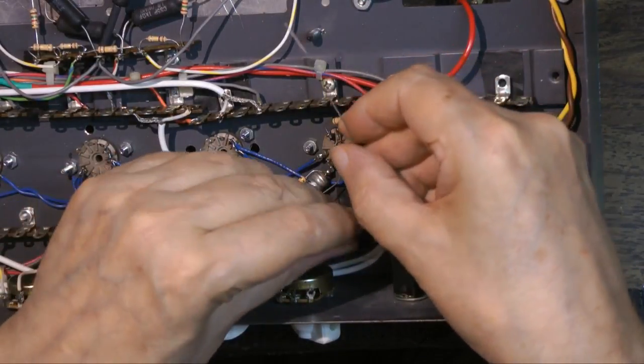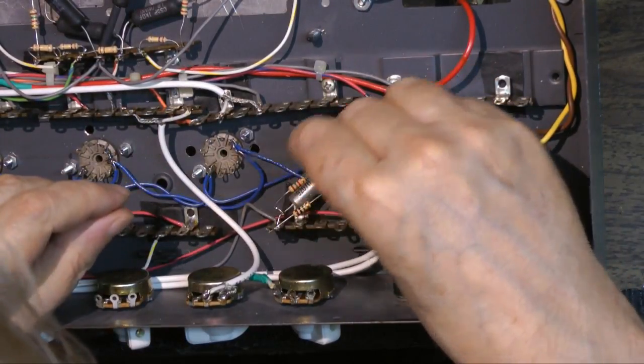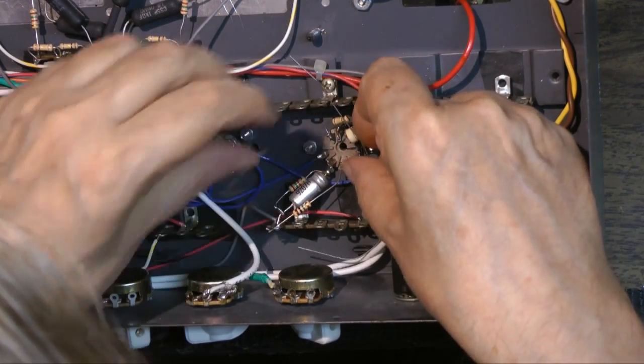That capacitor is going to that shielded cable which heads down to the reverb pot on the other side of the amp.